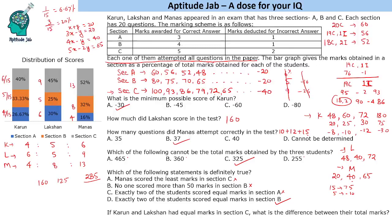The definitively true statement is: 'Exactly two of the students scored equal marks in Section B.' Lakshan scored 40 and Manas scored 40 in Section B regardless of Karun's case, so this is always true. For the last question — if Karun and Lakshan had equal marks in Section C, that means Karun's Section C = 72, so his total = 180. Lakshan's total = 160. The difference is 20 marks. This was a challenging set requiring deep thinking to recognize which scores were achievable.